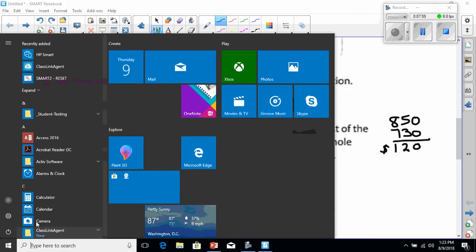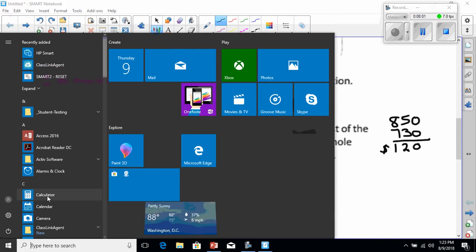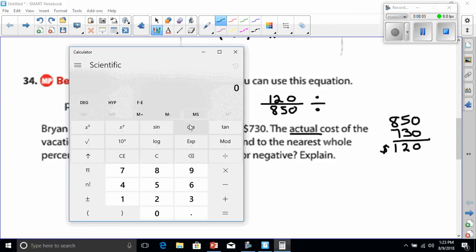Let's work that out. 120 divided by 850. Let's try that one more time to make sure I did that right. 120 divided by 850. Oh, that's better. 0.14.